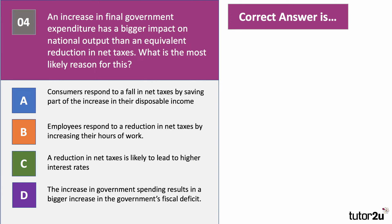Question four: an increase in final government spending has a bigger impact on national output than an equivalent reduction in net taxes. What is the most likely reason for this? Have a go at question four.